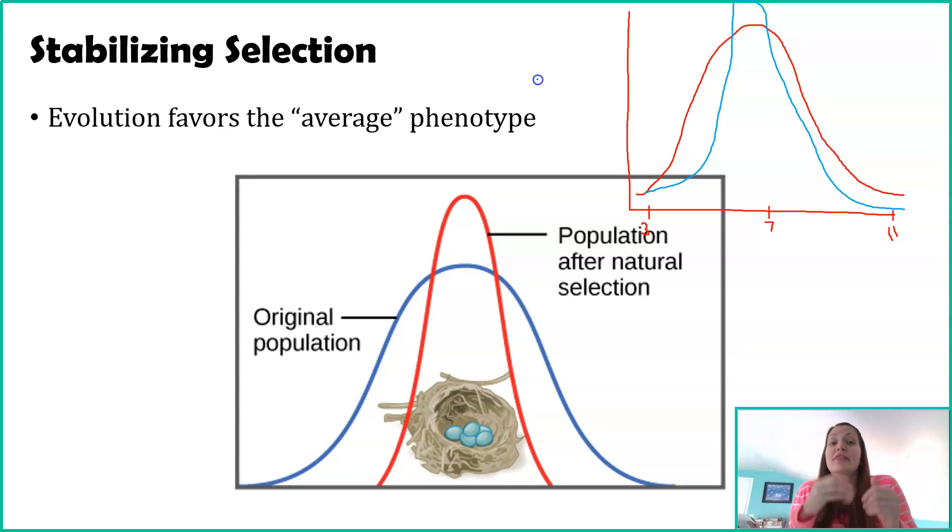Stabilizing selection is the selective pressure, whether it's number of dots on your tail feather or whatever, that's favoring the average or the middle of that phenotype.